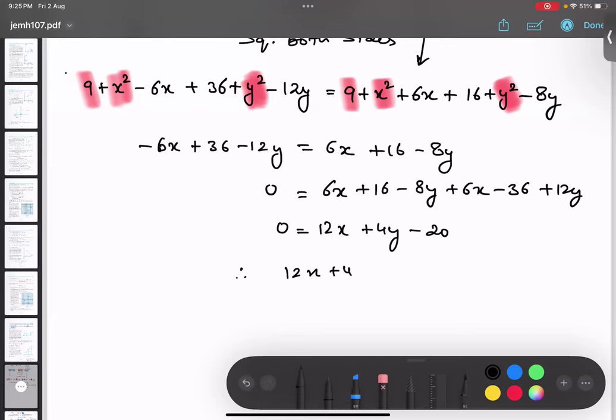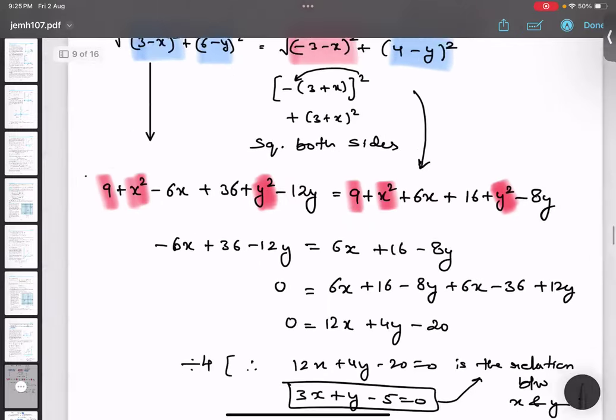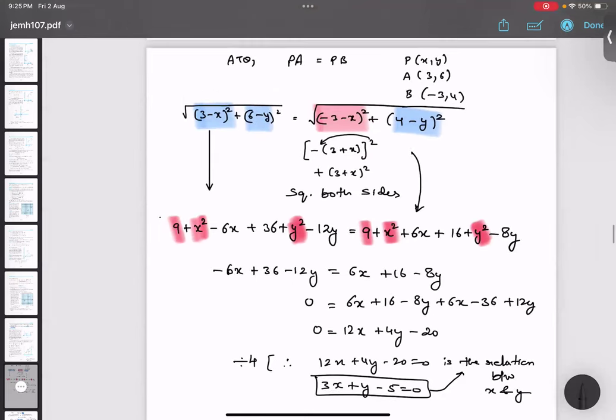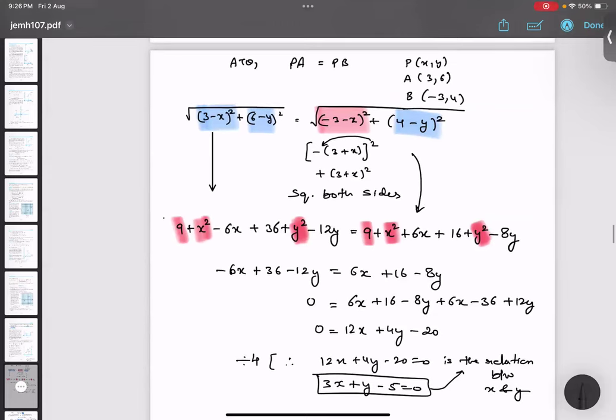Therefore 12x plus 4y minus 20 equals to 0 is the relation. Nice observation. So 4 common, dividing by 4 because it is an equation. Dividing by 4. So 3x plus y minus 5 equals to 0 is the relation between x and y. Any doubt? No. When the question is asking you to find out a relation, that means they are asking you to find out an equation between x and y. Okay. Quickly copy this thing. Take a screenshot.